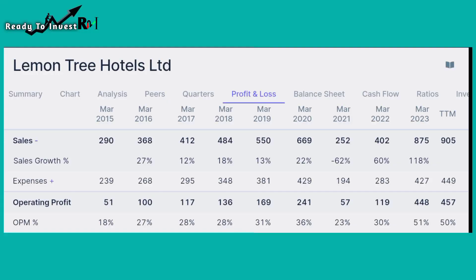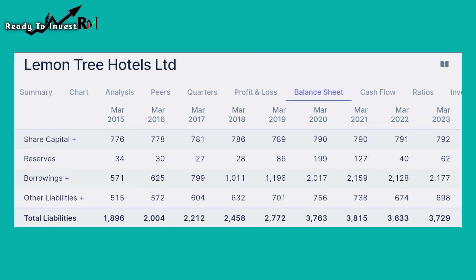In the profit and loss sheet, you can see sales, sales growth, expense, operating profit, and operating profit margin increasing year-wise. During the pandemic situation, profits were impacted, but by 2022 and in recent results, there has been a large sales growth increase. This company has shown a lot of profit growth and you can see the Lemon Tree Hotel performance improving.